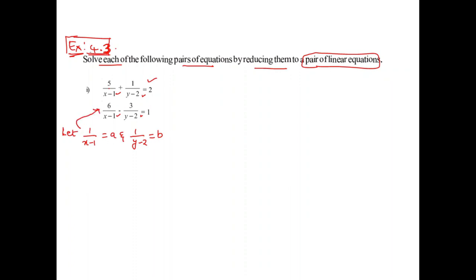Substituting these into the equations, they are reduced to 5A plus B equals 2 — let's call this equation number 1. And the second equation becomes 6A minus 3B equals 1. The equations are now reduced to this form.